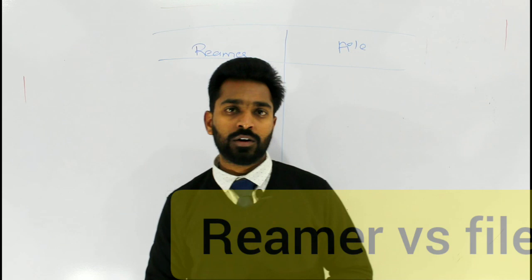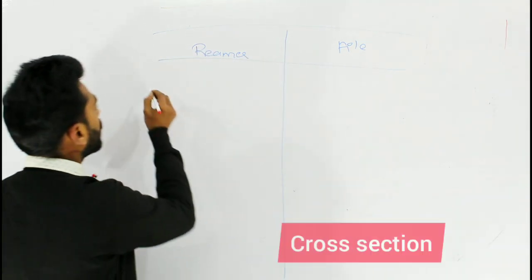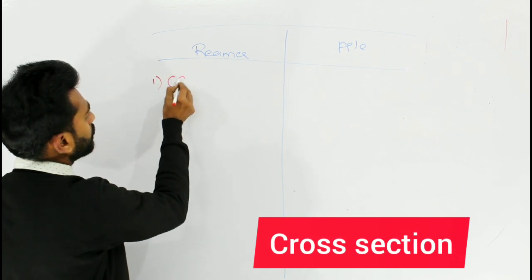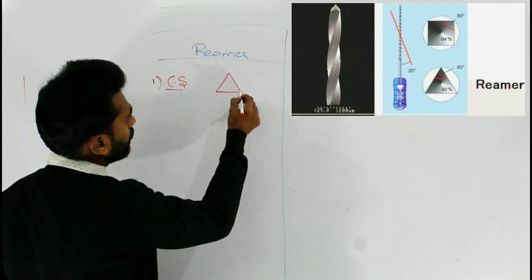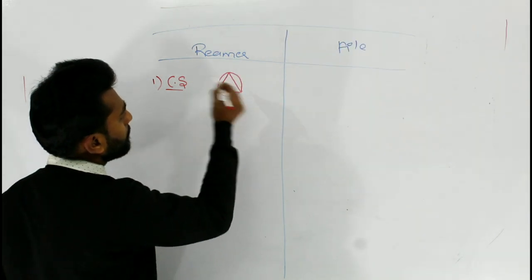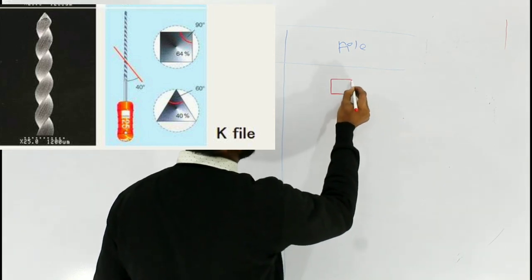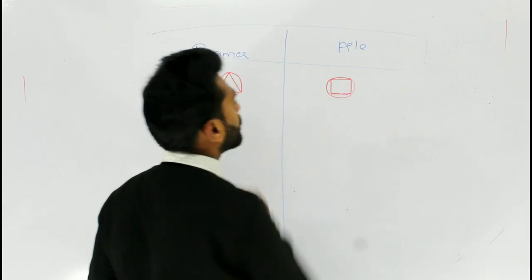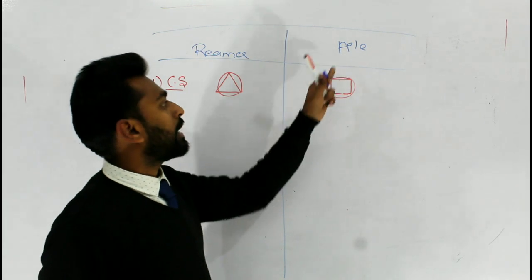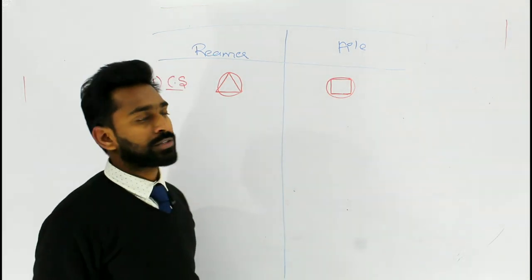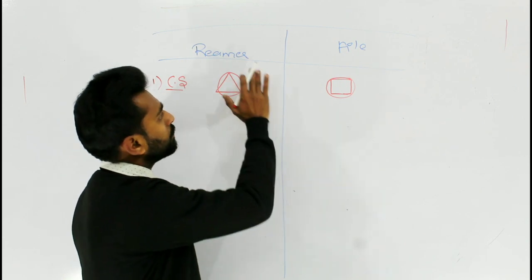Both reamer and file are hand operated endodontic instruments. Coming to the cross section, a reamer has a triangular cross section, whereas a file has a square or rectangular cross section. Don't confuse between the cross section of a reamer and a file.